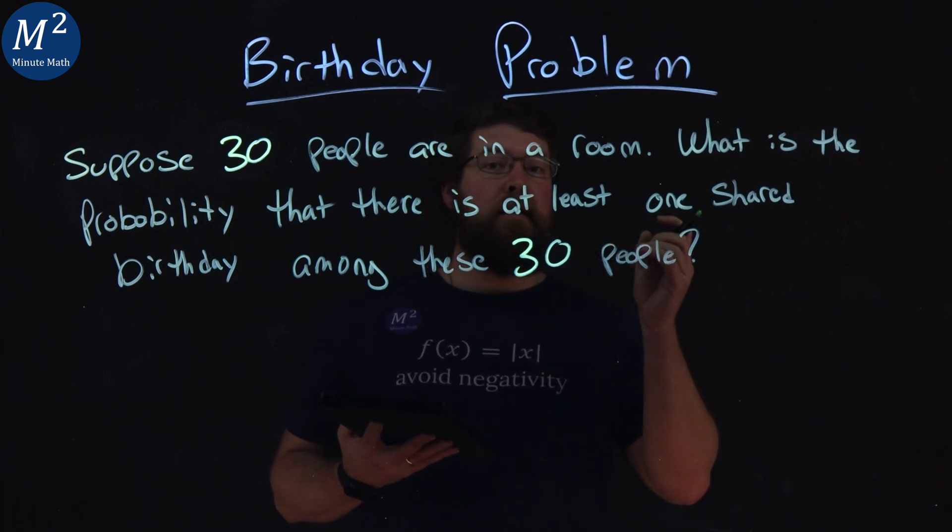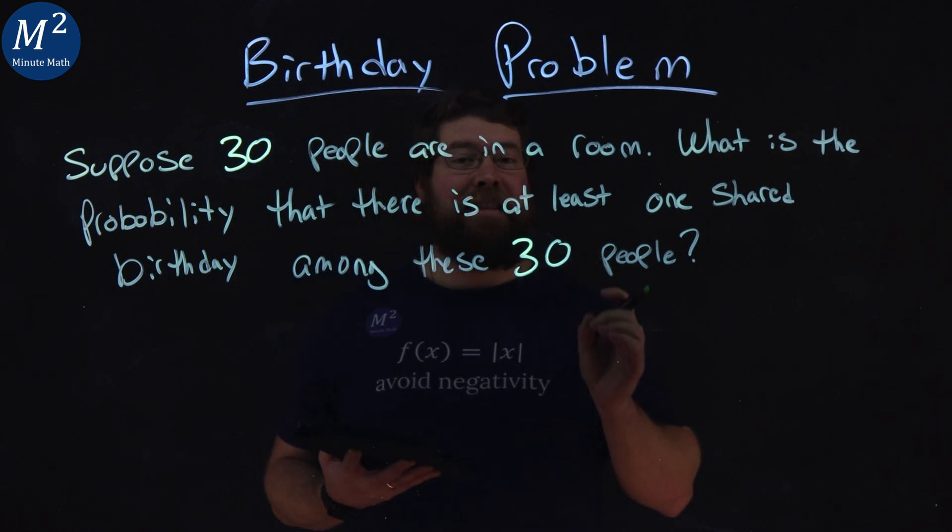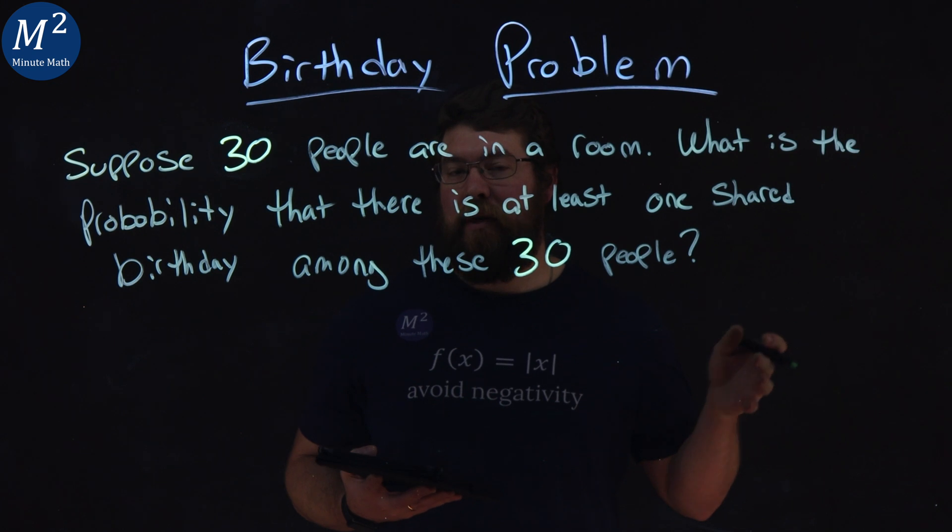Suppose 30 people are in a room. What is the probability that there is at least one shared birthday among these 30 people?